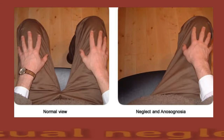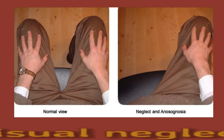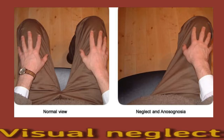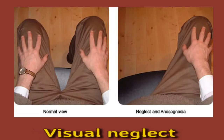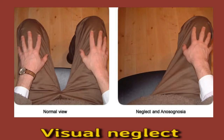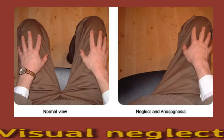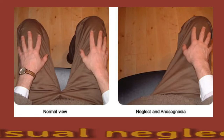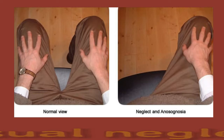Visual neglect: A stroke can also affect how the brain processes visual information, causing several visual processing problems. The most common type of problem is visual neglect. Visual neglect, or spatial inattention, occurs when a person does not respond to visual stimuli in the areas that the stroke affected — they may not be aware of or respond to things on the affected side. Visual neglect may occur on its own or along with other issues such as visual field loss, and having both may make some training techniques less effective.